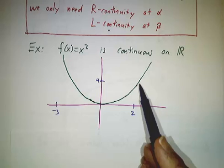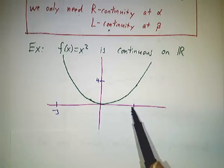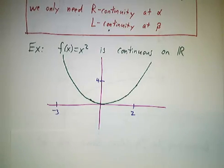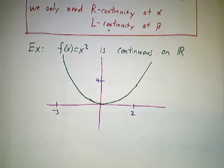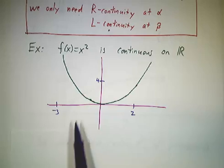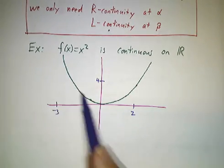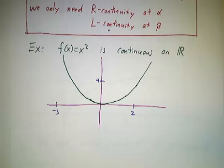2.01² is very close to 2², and 1.99² is very close to 2². And (-3.01)² is very close to (-3)². You can draw the whole graph without picking up your pencil. It's continuous.